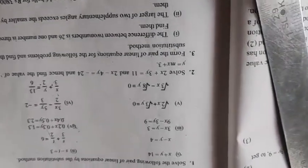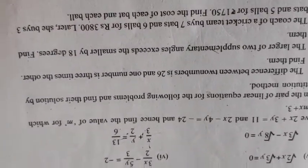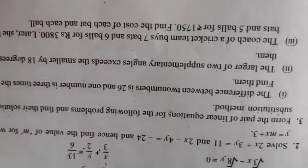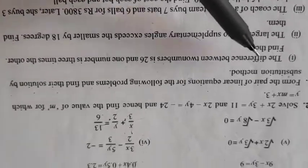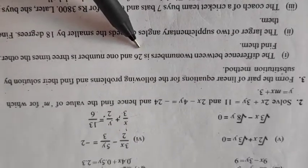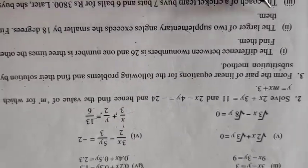Come on. Now the next question. What is the next question given over here? From the following pair of equations, you have to frame the equation and then you have to solve it. So how will you frame the equation now? The first question says difference between two numbers is 26. One number is 3 times the other. Find them.